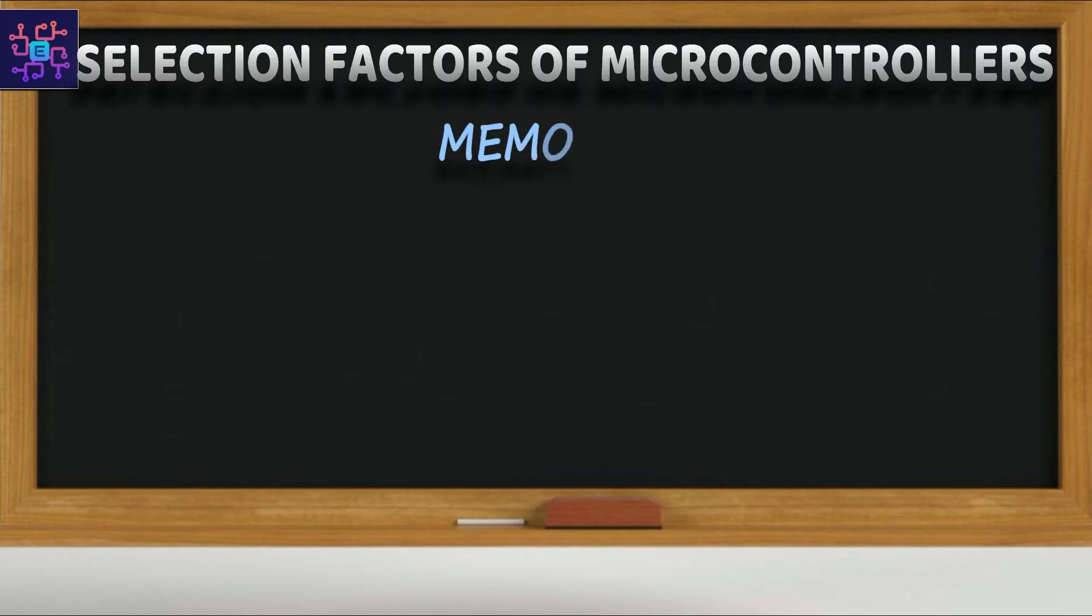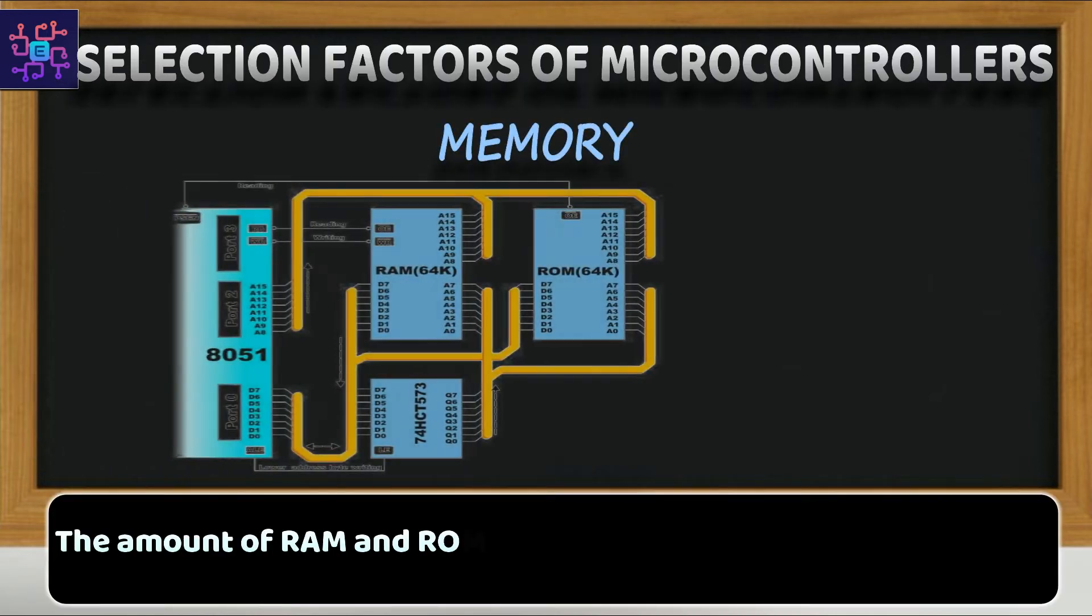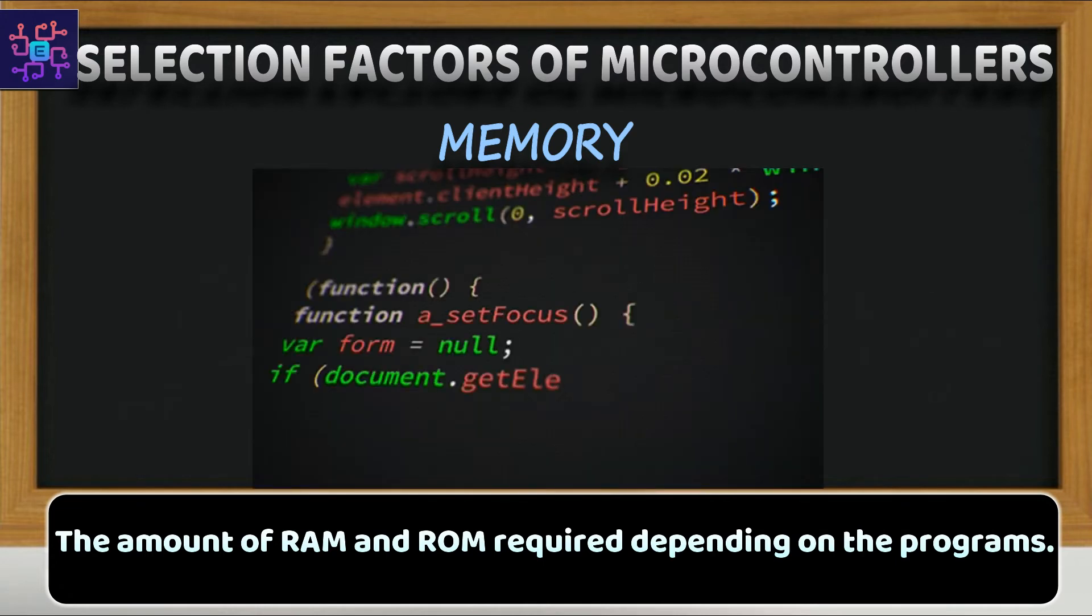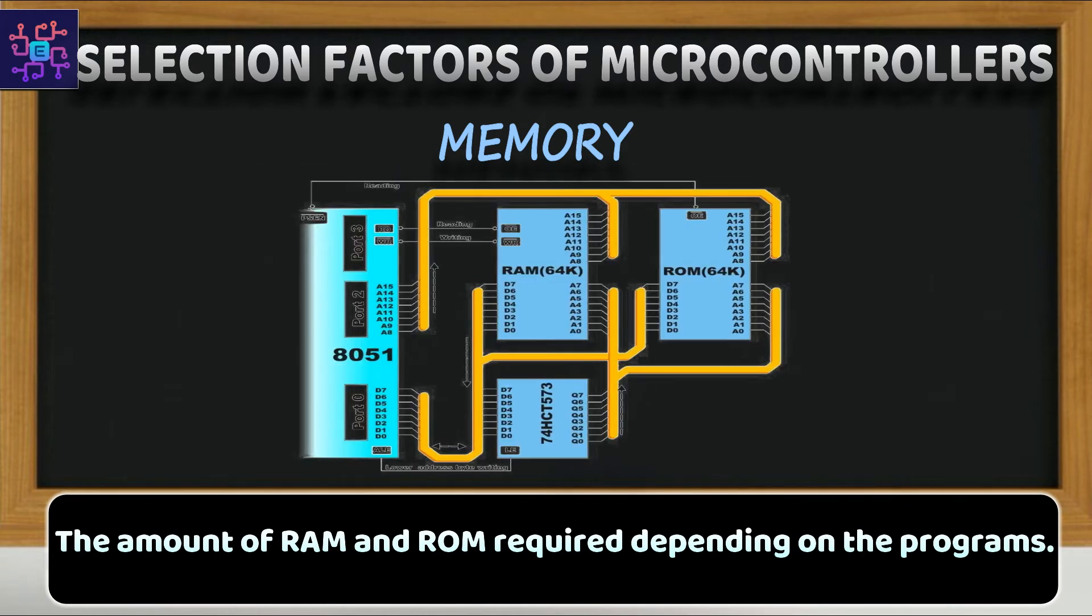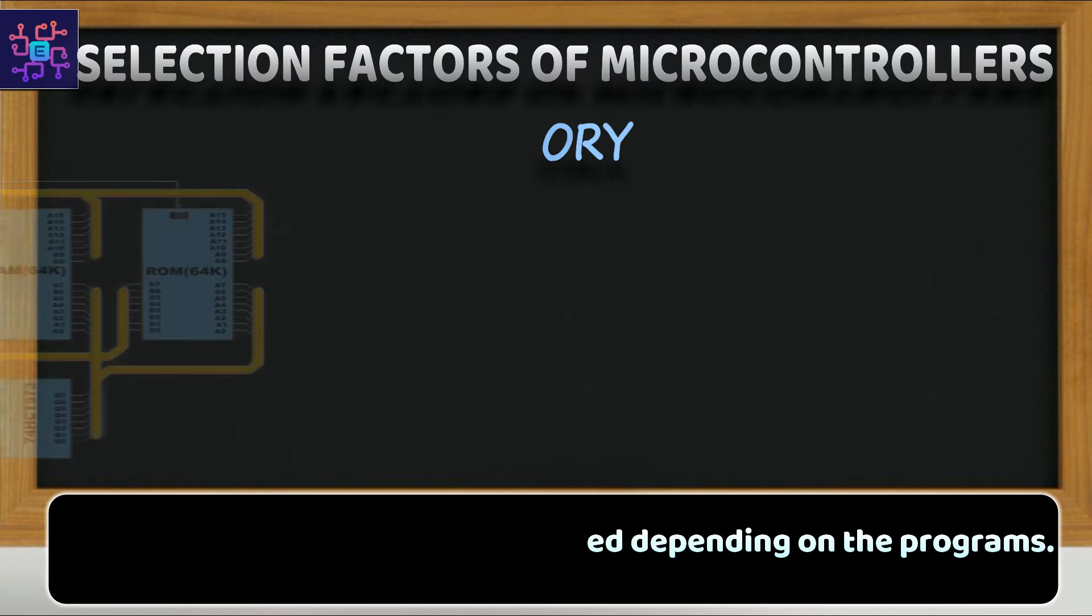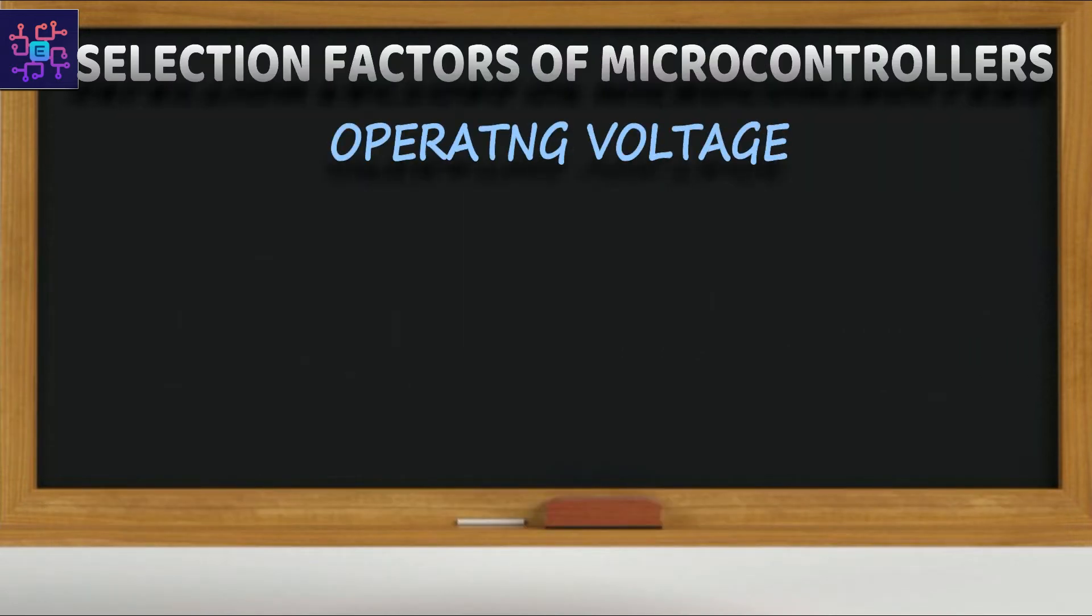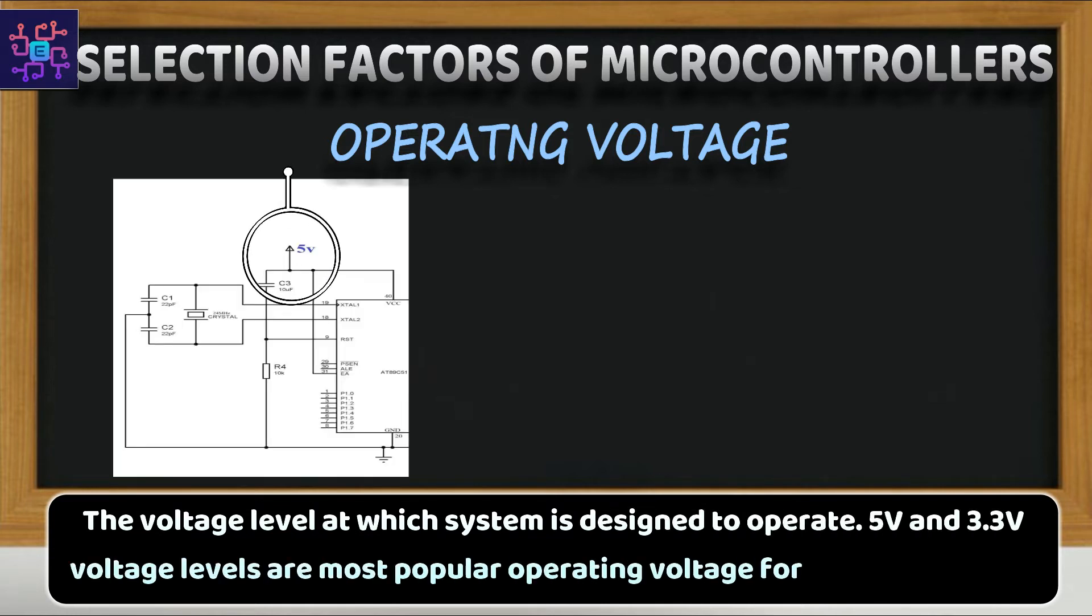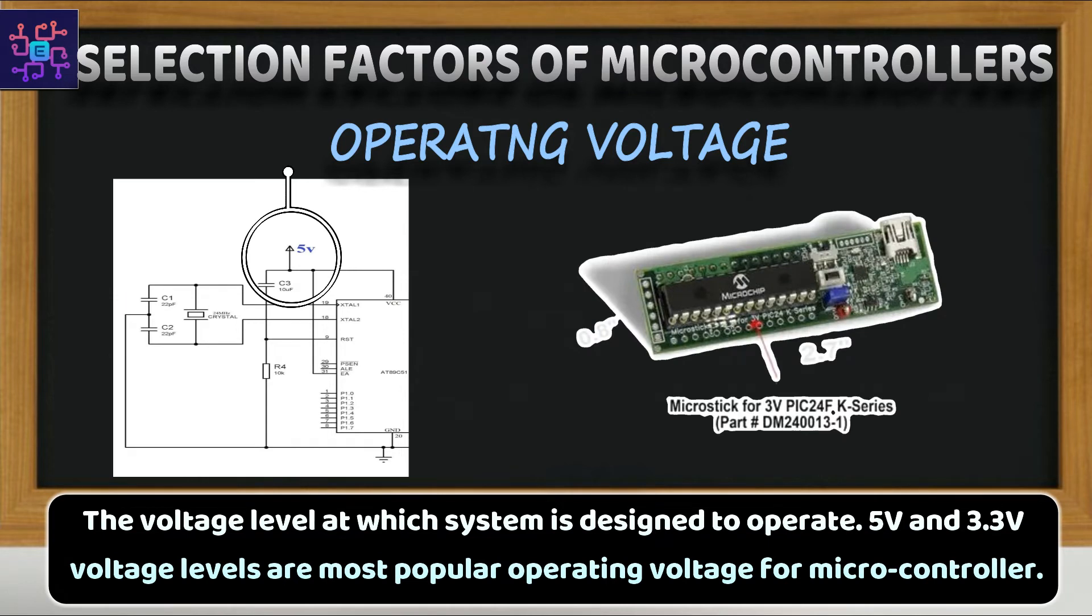Third aspect is the memory. The amount of RAM and ROM you will need depends on the program you will be running. More number of programs needs more RAM. Fourth is the operating voltage. It is the voltage level at which a system is designed to operate. The 5 volts and 3.3 volts voltage levels are the most popular operating voltages used for microcontrollers.